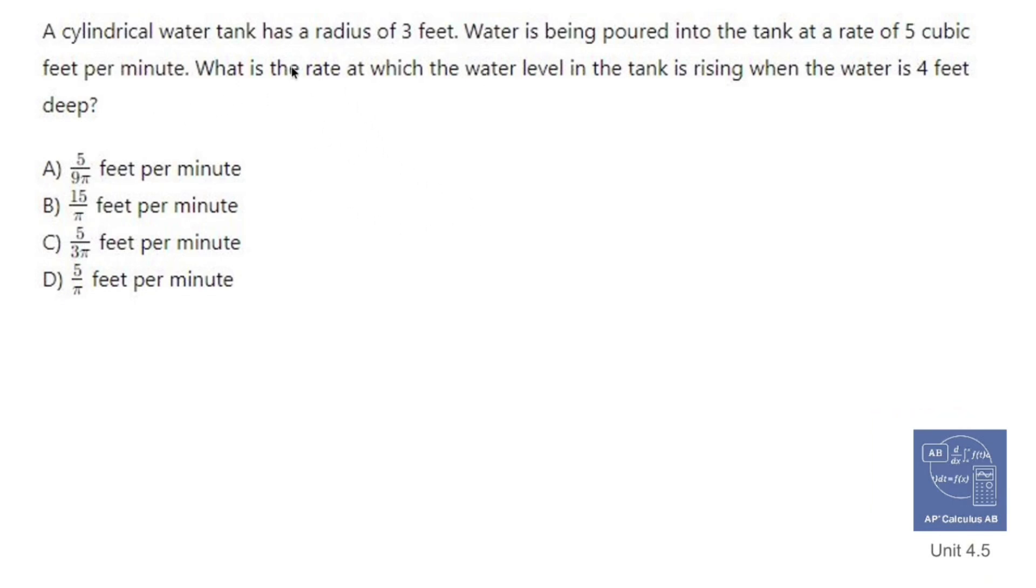Alright, so what we're dealing with is a cylindrical water tank. So we're dealing with volume equals pi r squared h. But we know that the radius is 3 feet. So the volume is pi 3 squared h. Okay, so I can write out 9 pi h.